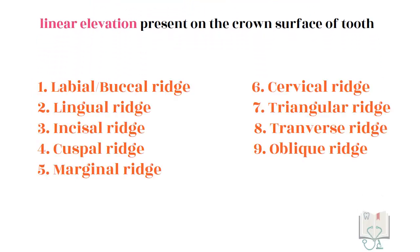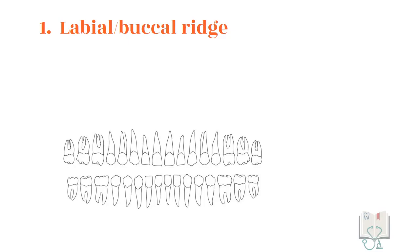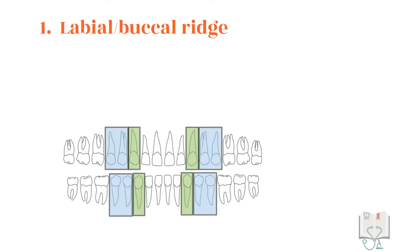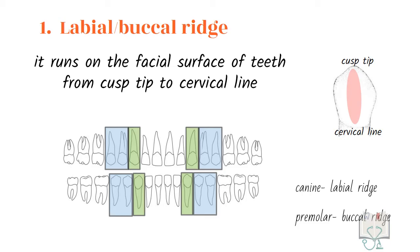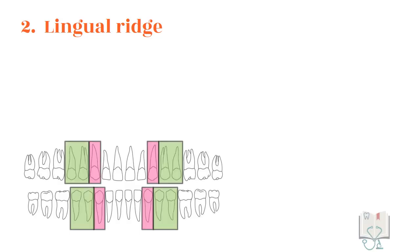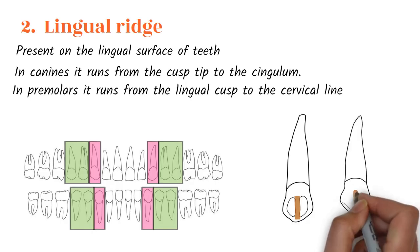A ridge is a linear elevation on the tooth, named according to their location, shape, or direction on the crown. The labial or buccal ridge is present on all canines and premolars, running on the facial surface from the cusp tip to the cervical line — called labial ridge in canines and buccal ridge in premolars. The lingual ridge is seen in canines and premolars and runs on the lingual surface; in canines it runs from the cusp tip to the cingulum, splitting the lingual surface in two, and in premolars it runs from the lingual cusp tip to the cervical line.